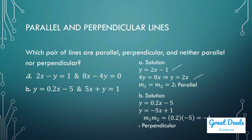Letter B: y equals 0.2x minus 5, and 5x plus y equals 1. The first line is already in slope-intercept form with slope 0.2. The second line becomes y equals negative 5x plus 1, with slope negative 5. The product of their slopes is negative 1, therefore these two lines are perpendicular.